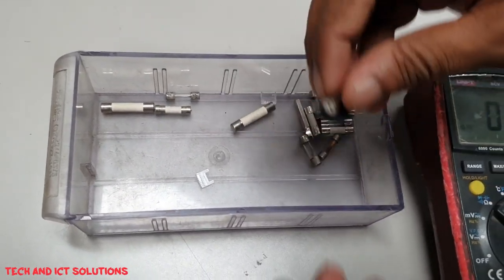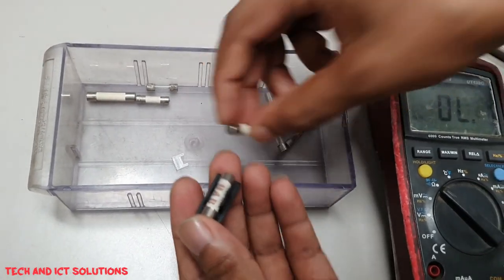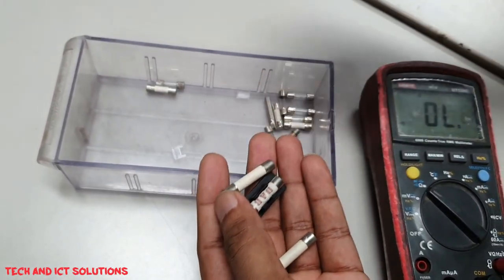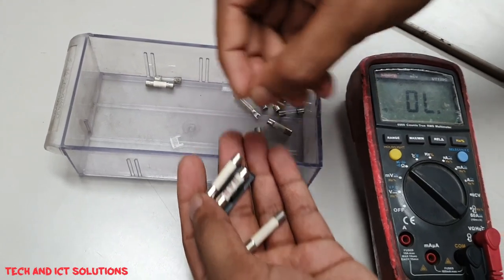Here is a different type of fuse for checking good or bad conditions. You can measure any fuse with the same method by a multimeter.